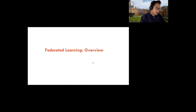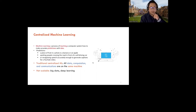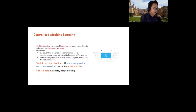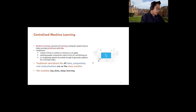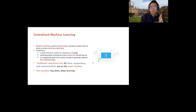First, I want to introduce federated learning — the motivation and the benefit of federated learning. Because the audience has diverse backgrounds, I want to make sure we are on the same page, so I'd like to start from the beginning — from the basic standard definition of machine learning. According to this standard definition, machine learning is a process of teaching a computer system how to make accurate predictions with data.